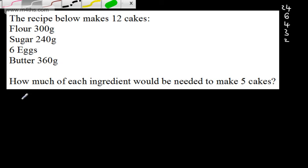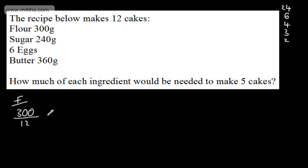So if we now consider flour, we're going to have 300 grams divided by 12. 300 divided by 12 is 25. So we need 25 grams of flour per cake. So what we're going to have is 5 times by 25, and that's going to give us 125 grams. So that's the flour.